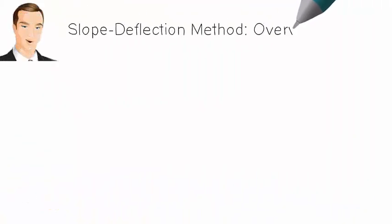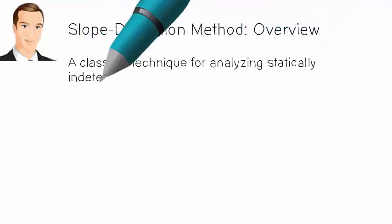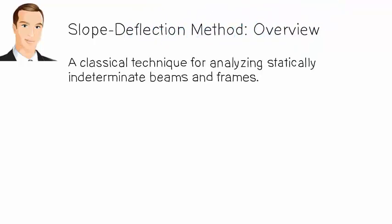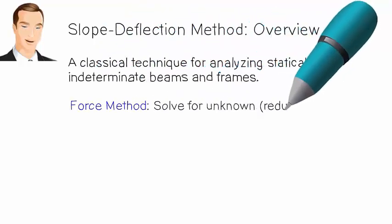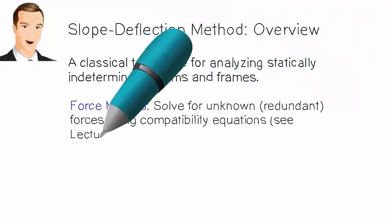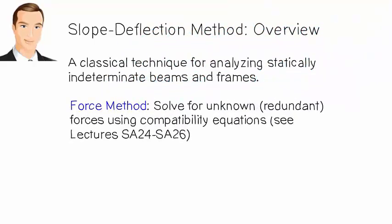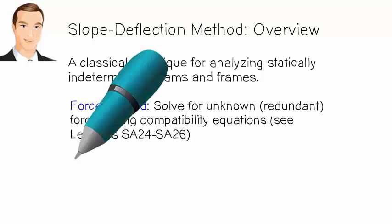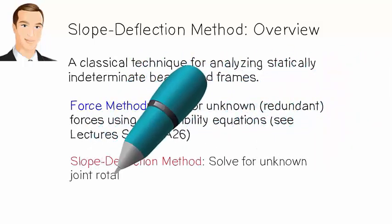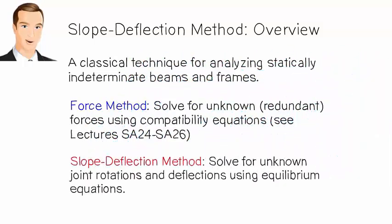This lecture provides an overview of the slope-deflection method for analyzing statically indeterminate beams and frames. Similar to the force method, the slope-deflection method is a classical structural analysis technique. The force method uses redundant forces as unknowns to be determined using compatibility equations. In the slope-deflection method, as the name suggests, the unknowns are slopes and deflections at the joints of the structure, calculated using equilibrium equations.